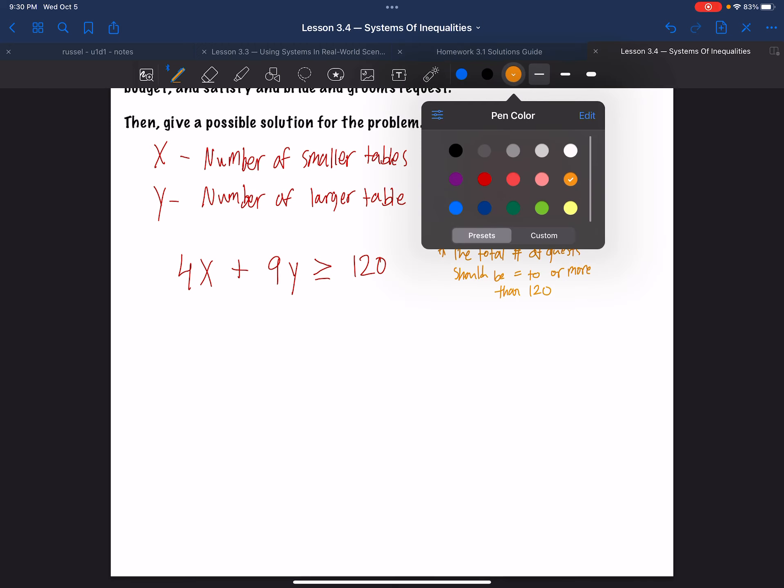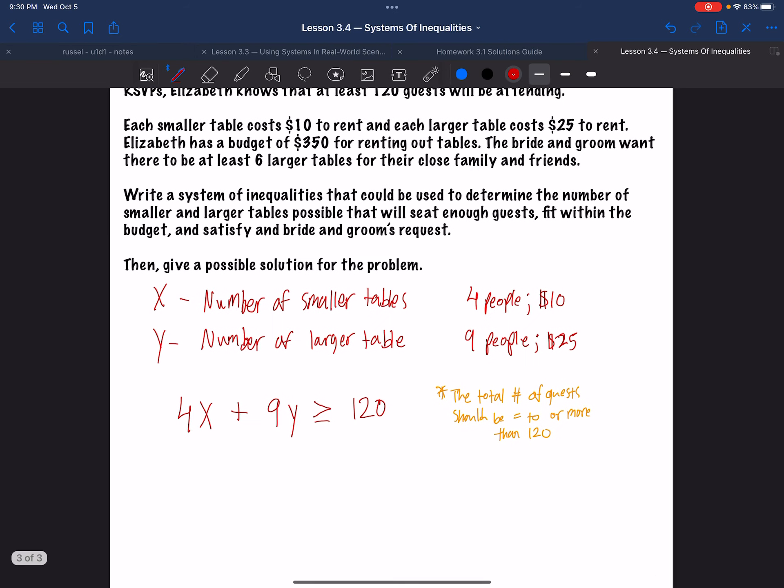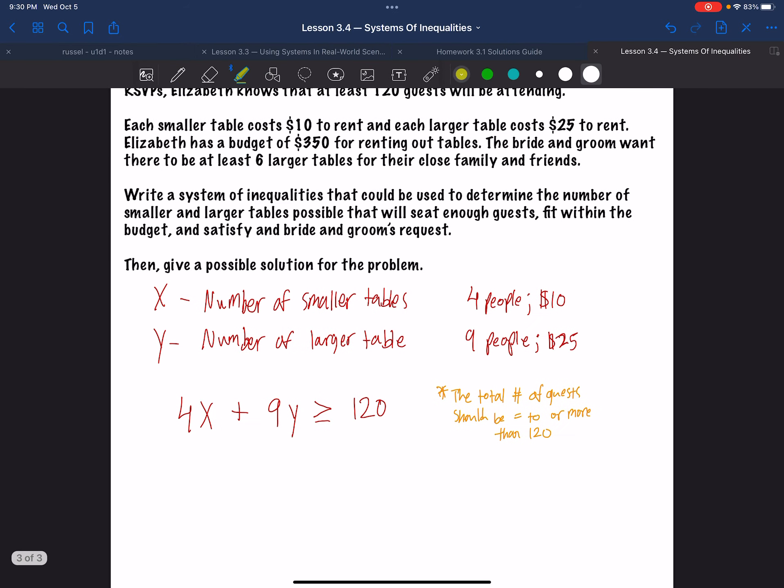Now think about that word at least. This is really important. At least. Does that mean less than, or does that mean greater than? Less than, or greater than? Well, if it's at least something, that means 120 should be smallest, right? That 120 should be the smallest number of guests because the total needs to be more than 120. So I might even write that down just in little yellow right here. The total number of guests should be equal to or more than 120 since it's at least. Okay. So that's our first equation.